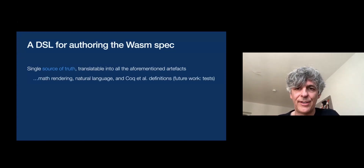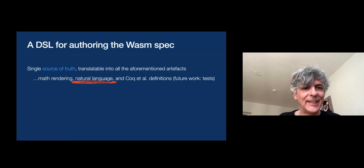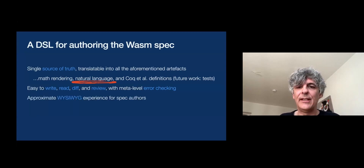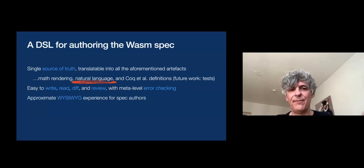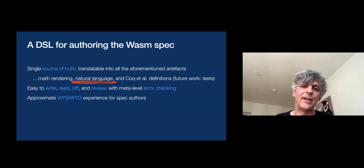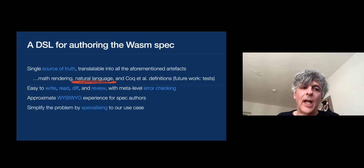We want a DSL that allows you to do that — specifically for authoring the Wasm spec. The specification of Wasm in this DSL is supposed to be the single source of truth for the semantics and definition of Wasm, and it's translatable into all these artifacts. The most interesting part is it's translatable into natural language. It's supposed to be easy to write and read, giving the spec author a WYSIWYG experience. We also get extra error checking that you didn't have when manually writing LaTeX.